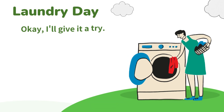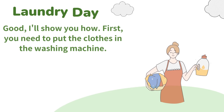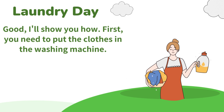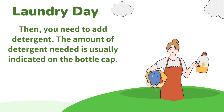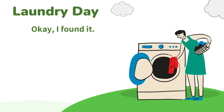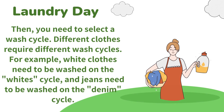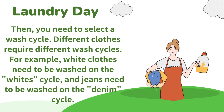Okay, I'll give it a try. Good, I'll show you how. First, you need to put the clothes in the washing machine. Okay, I put them in. Then you need to add detergent. The amount of detergent needed is usually indicated on the bottle cap. Okay, I found it. Then you need to select a wash cycle.